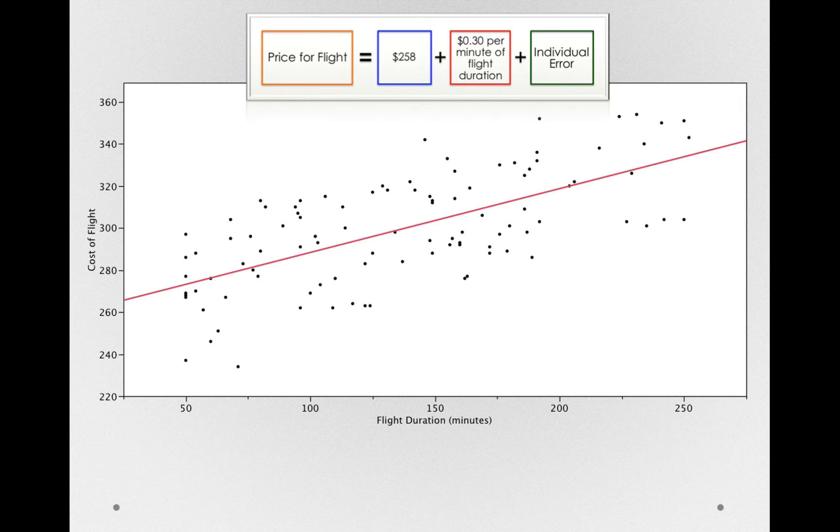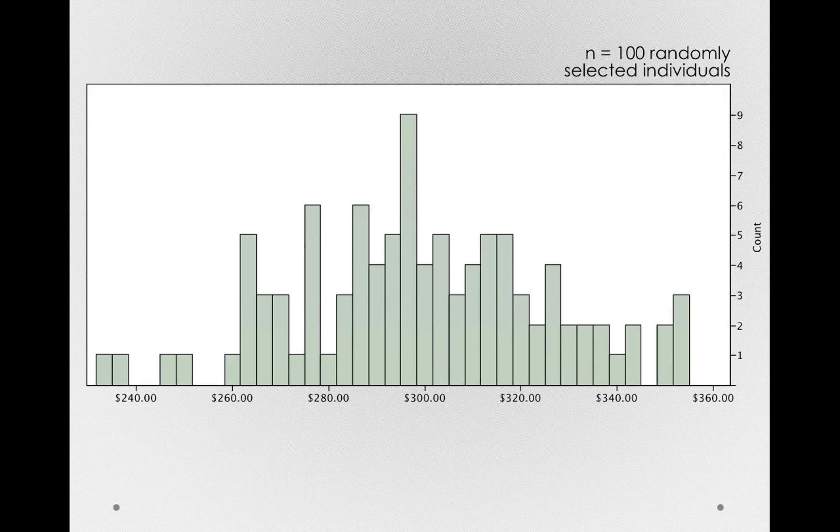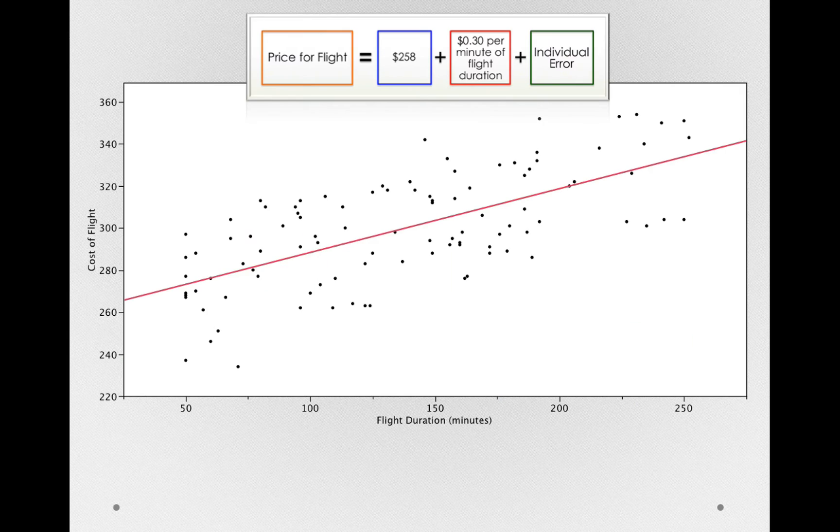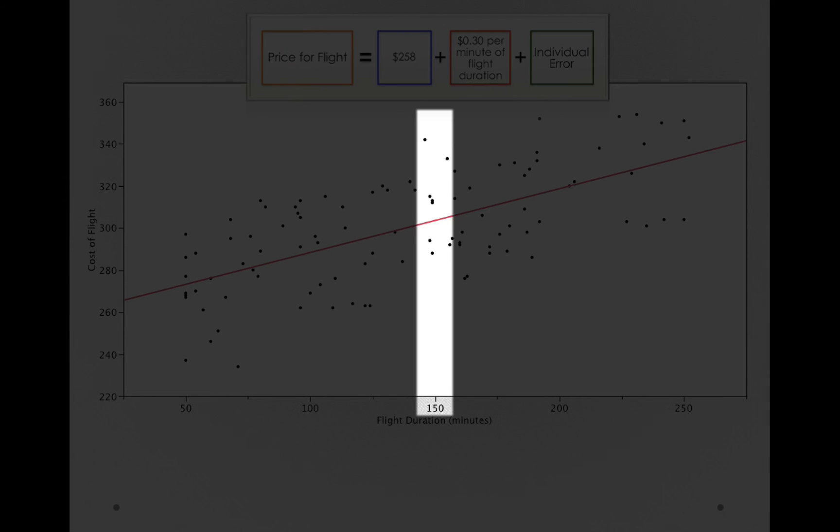Let's look at all these components in the plot. First, notice that the price for the flight, how much individuals are spending overall, is related to flight duration. For every additional minute of flight, we're adding just a little bit more to that line. But that line doesn't perfectly represent every person. Take the people at 150 minutes. There's spread around that line.